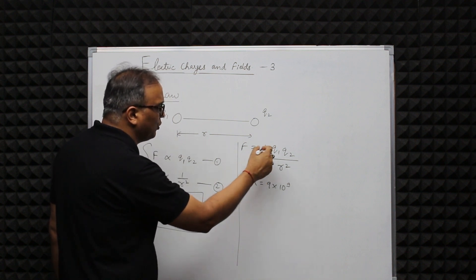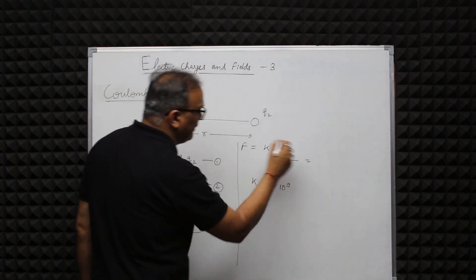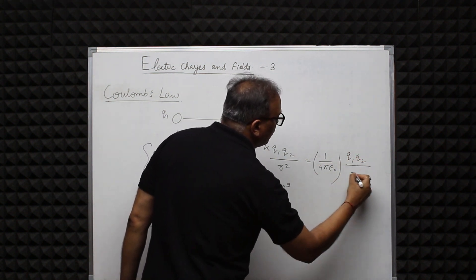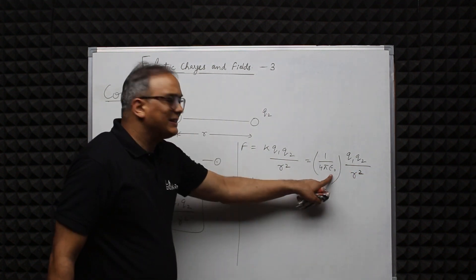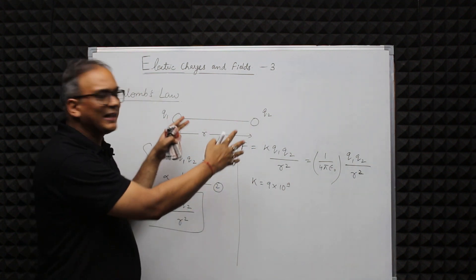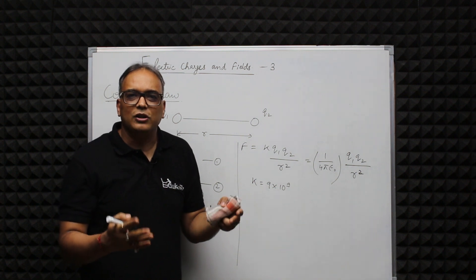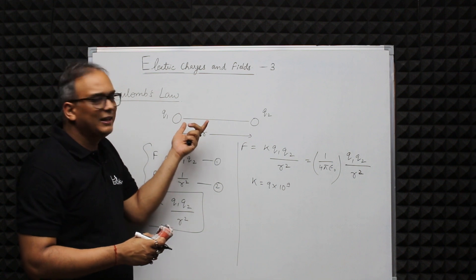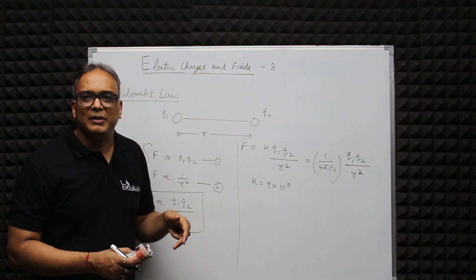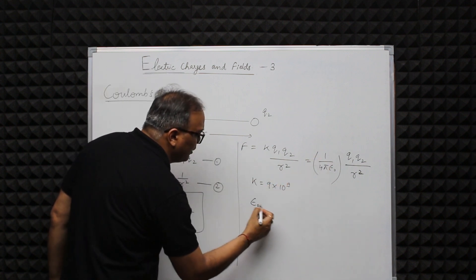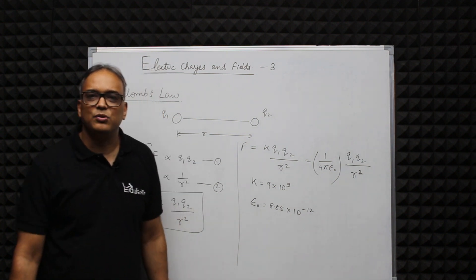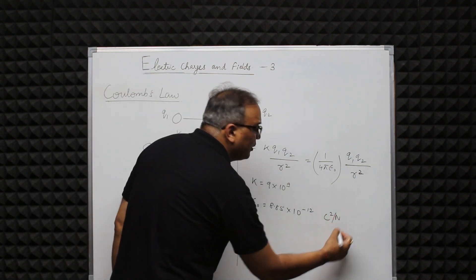We can also replace k by 1/(4πε₀), giving F = q1·q2 / (4πε₀·r²). Here ε₀ is the absolute permittivity of the medium — the inherent property of the medium which permits electric field lines to pass through it. The value of ε₀ is 8.85 × 10⁻¹² C²/(N·m²). These are the values you should remember, and this is Coulomb's Law.